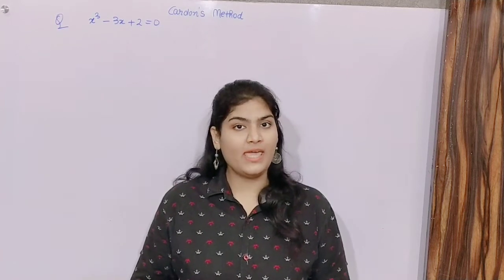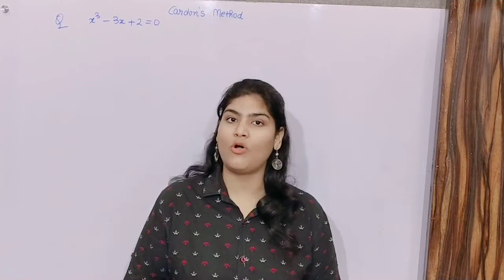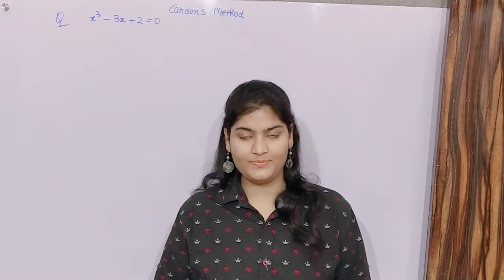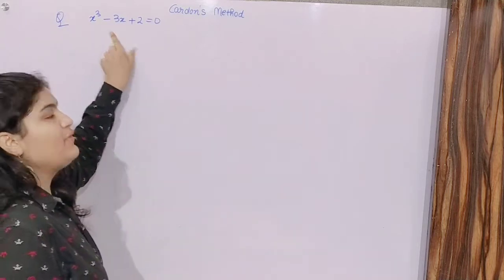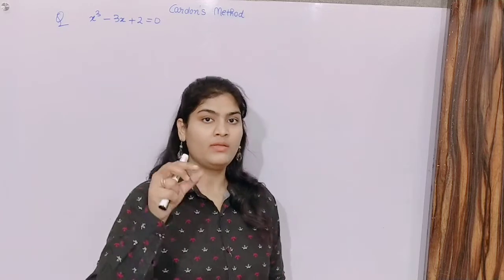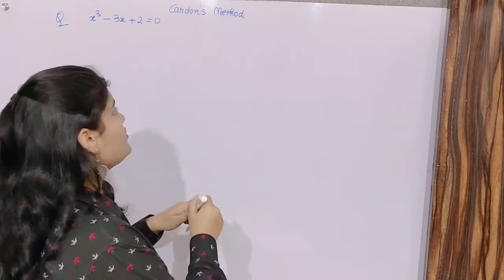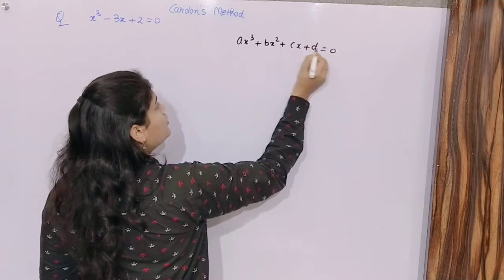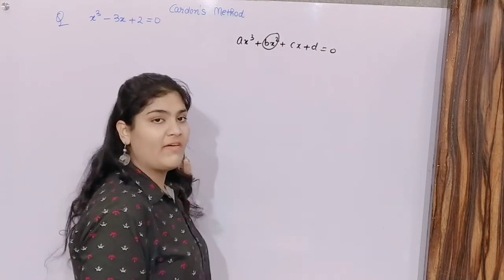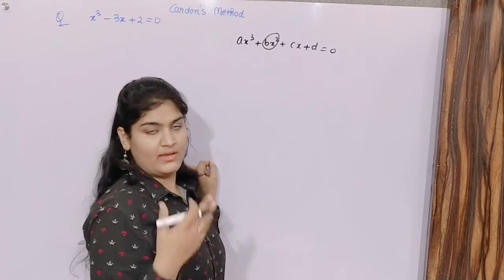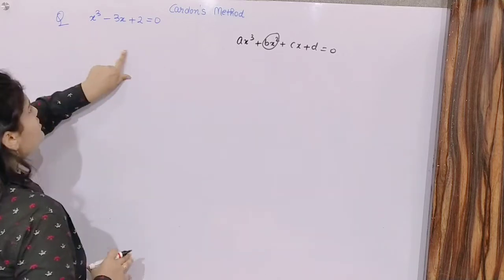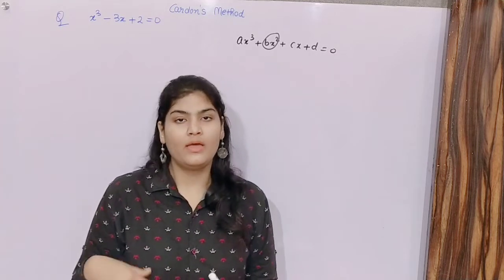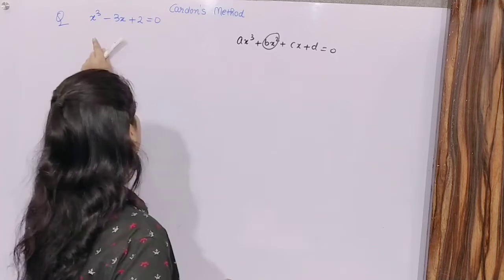Welcome to Ganesh Institute channel. Today we are going to discuss how we can solve a cubic equation through Cardano's method. What you need to do if you have a cubic equation is firstly remove the term which has degree 2. The general form of a cubic equation is shown here. Luckily in this example there is no term with degree 2, so we can proceed. We will discuss an example with a degree-2 term later.